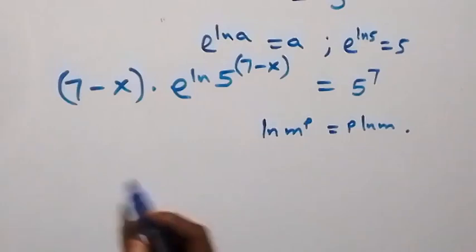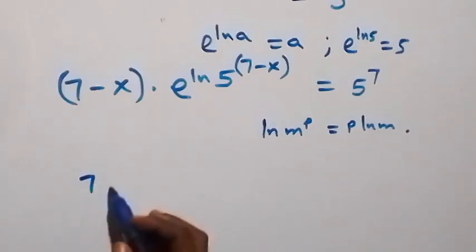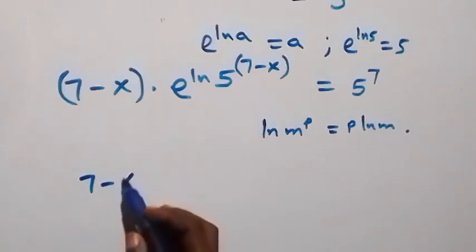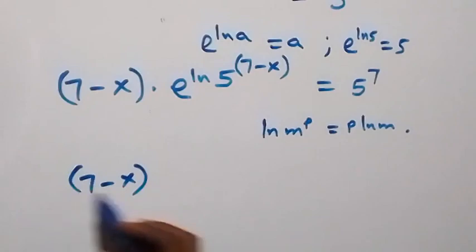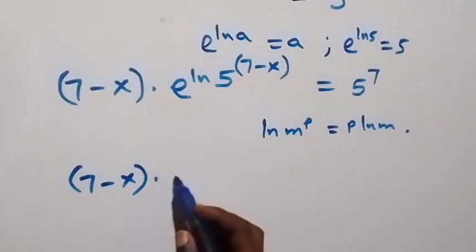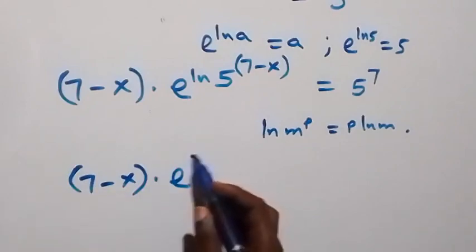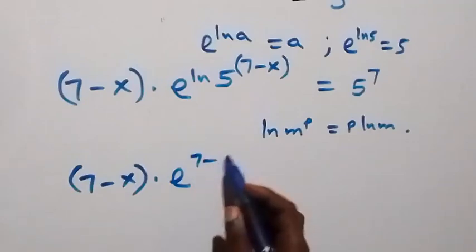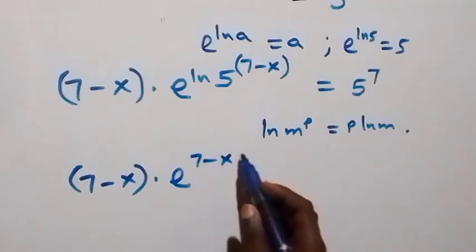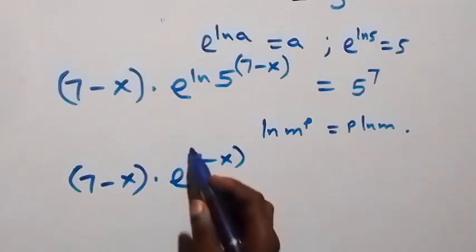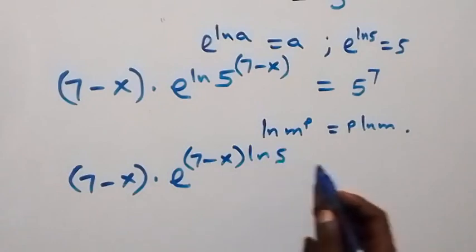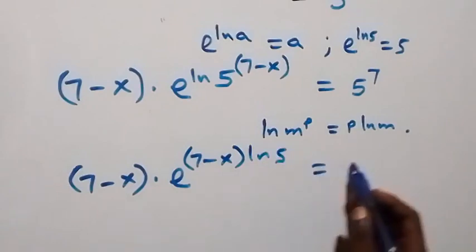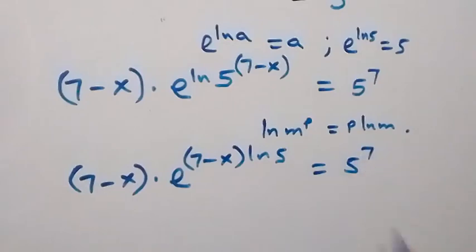This gives us (7 minus X) multiplied by e^((7 minus X) ln 5), equals 5 raised to power 7.